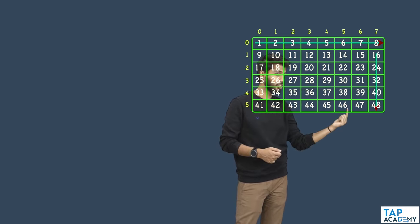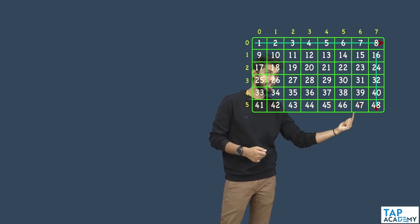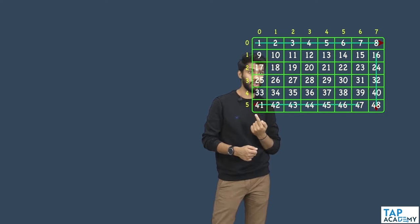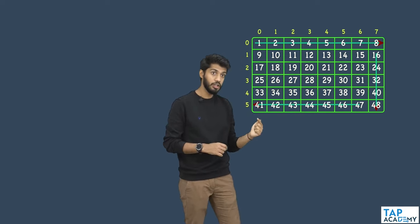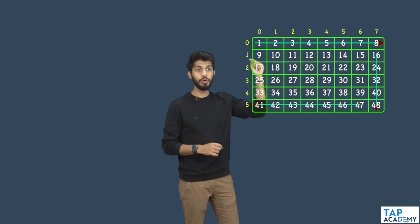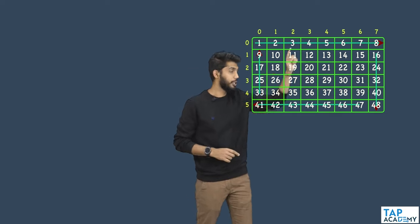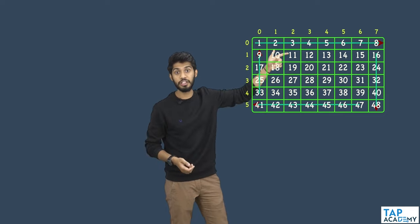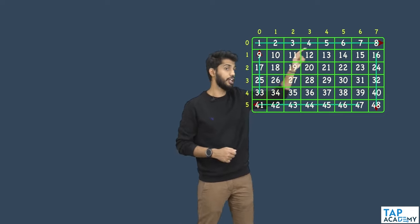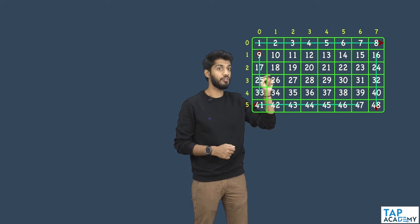Next, print from right to left — 47, 46, 45, 44, 43, 42, 41. Then from bottom to top — 33, 25, 17, 9. That completes one full rotation. Then repeat in the same order: left to right, top to bottom, right to left, bottom to top, going deeper each cycle.